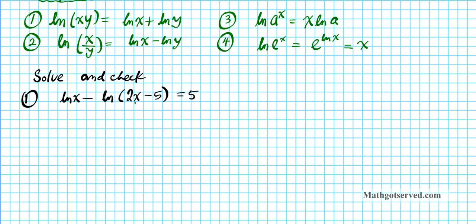To solve natural logarithmic equations, it's just like solving regular log equations — you want to condense the logarithms first and then eliminate the logarithm after condensation. To condense these two logs, we're going to use formula two, the quotient property. The difference of two logarithms is the same thing as the logarithm of the quotient. So this becomes the natural logarithm of x over 2x minus 5, and that equals 5.